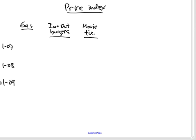Let's say that in January 08, each time you bought 20 gallons of gas, five In-N-Out burgers, and two movie tickets. This is the idea that the market basket, the things you buy, stay the same, so we're measuring the change in the price of buying the same things in three different months.